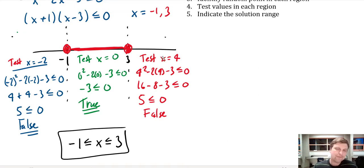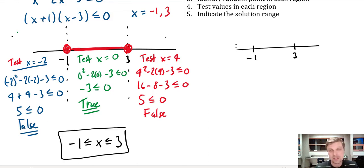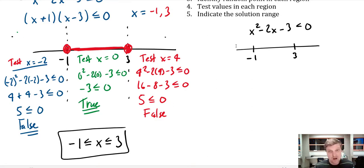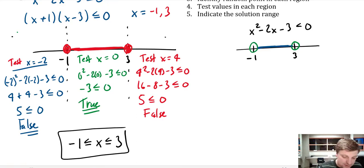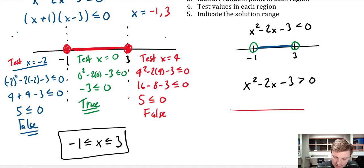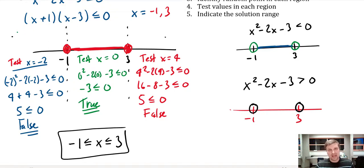A couple of things to note. If the inequality had been strictly less than zero — not equal to — I would circle the roots but leave them open and then shade the space between. If instead we wanted x squared minus 2x minus 3 greater than zero, I'd draw the number line with roots at negative 1 and 3, circle them open, and draw arrows going outward in both directions to show that the solution is everything outside those two points.